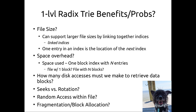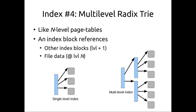With a single-level index, once you have the inode you know where every block is and can access them randomly as effectively as contiguous allocation. You can also achieve good external fragmentation with block-by-block allocation. However, if blocks aren't allocated contiguously, you start using more seeks than rotation. When the index is too large — like page tables — we can add multiple levels to our index structures, creating a multi-level radix trie analogous to an N-level page table.